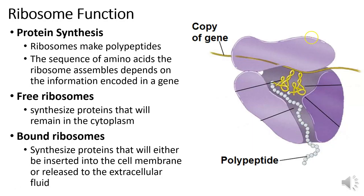A copy of a gene is sent from the nucleus to a ribosome, which reads the information and assembles a sequence of amino acids into a polypeptide. The polypeptide is eventually released from the ribosome. Free ribosomes make proteins that will stay in the cytoplasm, while bound ribosomes make proteins that will be transported from the rough ER to the Golgi and then ultimately to the cell membrane.